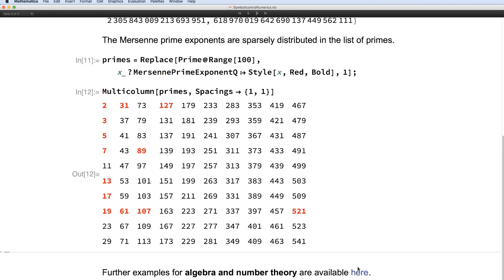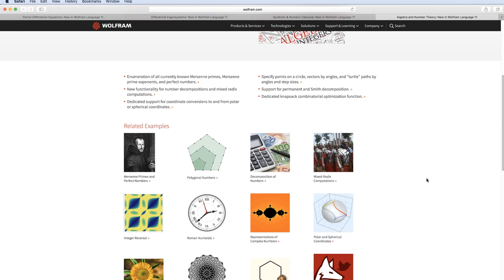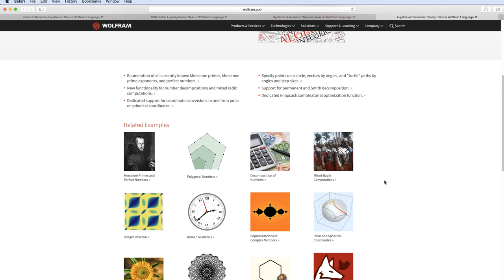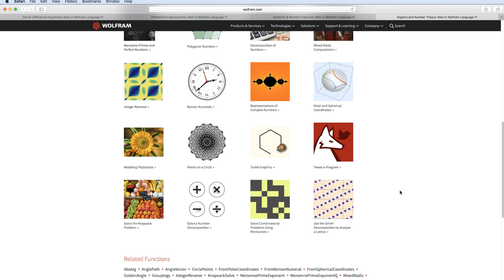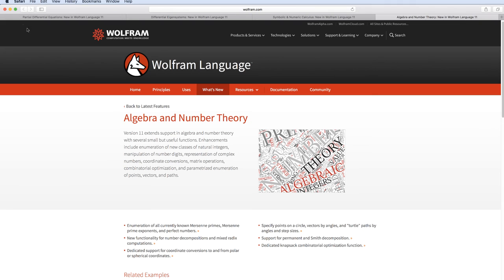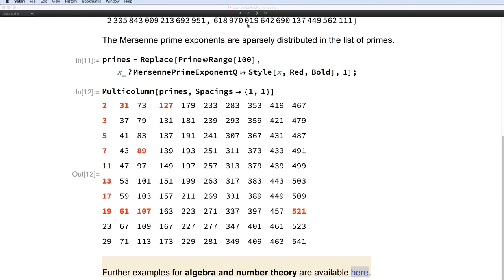And if you'd like further examples for this area, here's algebra and number theory. So you have the number theory over here. The polar coordinates and spherical coordinates, which I spoke about early on. The knapsack problem. And things like the Smith decomposition, which are pretty useful in practice. So once again, the algebra and number theory area is really quite impressive for a release of Mathematica. For any release of Mathematica, because we haven't had such a nice variety in a long time, I think.